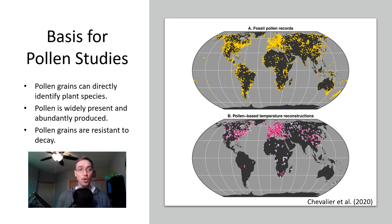On the top we see fossil pollen records. On the bottom we see pollen based temperature reconstructions. So just to kind of give an idea of where we're using pollen most effectively to reconstruct past climates.